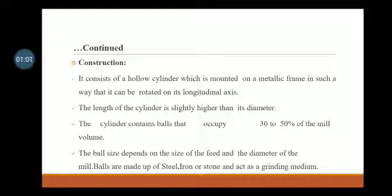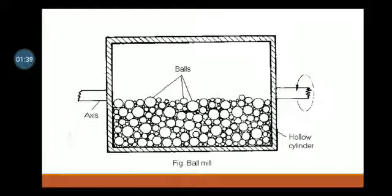Construction: It consists of a hollow cylinder which is mounted on a metallic frame in such a way that it can be rotated on its longitudinal axis. The length of the cylinder is slightly higher than its diameter. The cylinder contains balls that occupy 30-50% of the mill volume. The ball size depends on the size of the feed and the diameter of the mill. Balls are made up of steel, iron, or stone and act as a grinding medium. This is the diagram of a ball mill. It contains balls in a hollow cylinder with an axis.